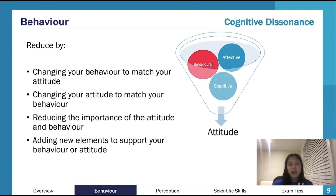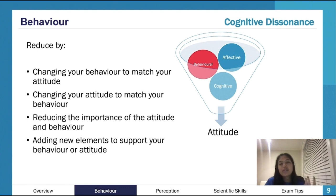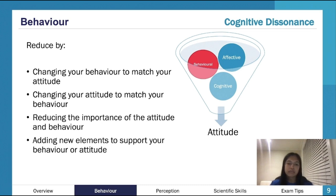Other ways to reduce cognitive dissonance include reducing the importance of the conflicting attitude or behavior — for instance, 'I only smoke socially' or 'it's not that serious.' You might also add new elements to support your position, like finding information suggesting it isn't as harmful. Basically, when you're aware you're engaging in behavior you don't agree with, you try to line things up as much as possible to eliminate that discomfort.